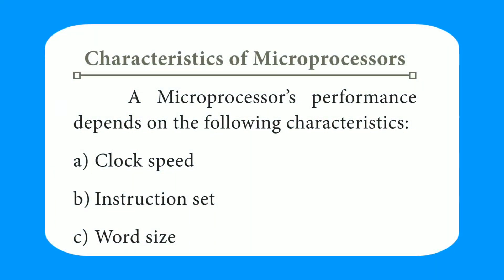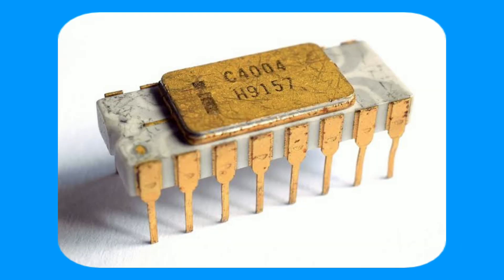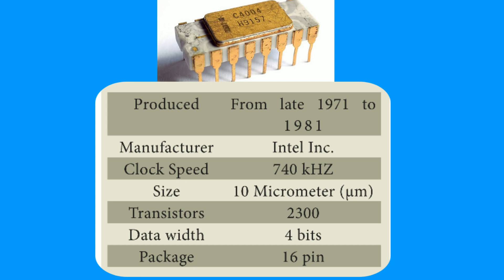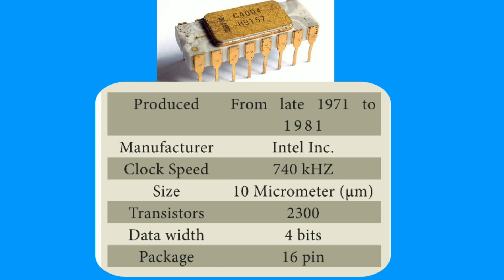The characteristics of a microprocessor are clock speed, instruction set, and word size. The first commercial microprocessor is the Intel 4004. It is a four-bit processor — it has four input pins and four output pins. The number of output pins is always equal to the number of input pins. It can process four bits at a time. It was produced from late 1971 to 1981. The manufacturer is Intel Incorporated. Clock speed is 740 kilohertz, size is 10 micrometers, 2300 transistors are used, and data width is four bits. The package is 16-pin.